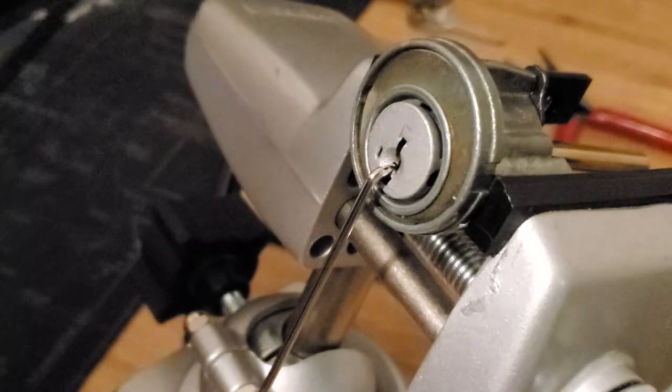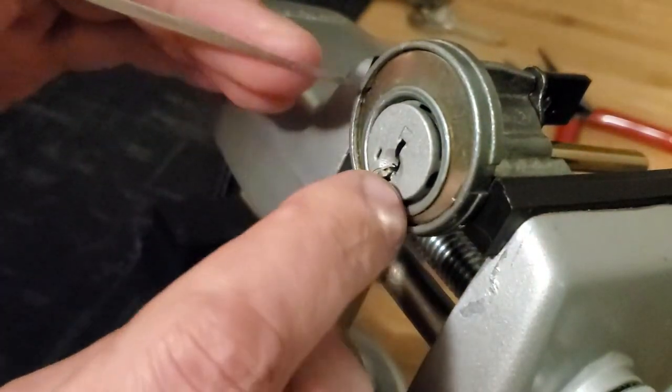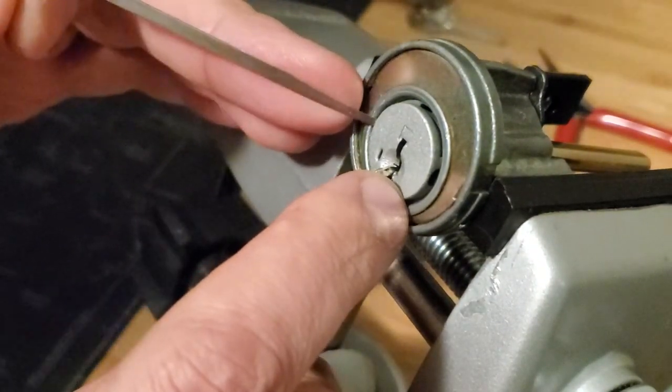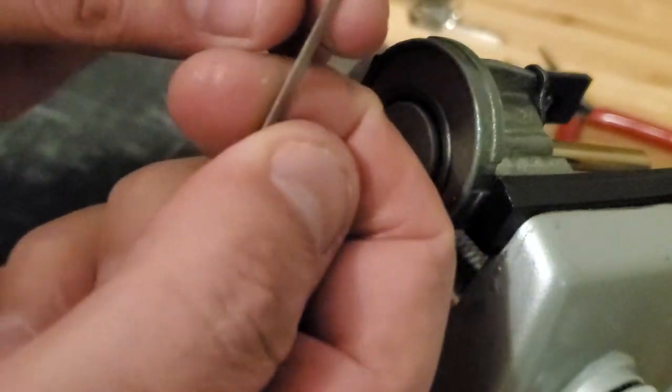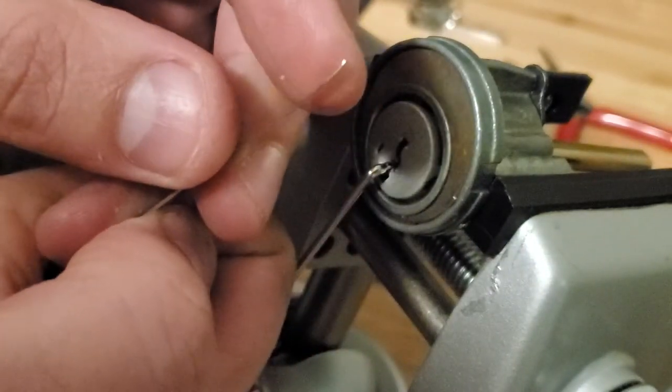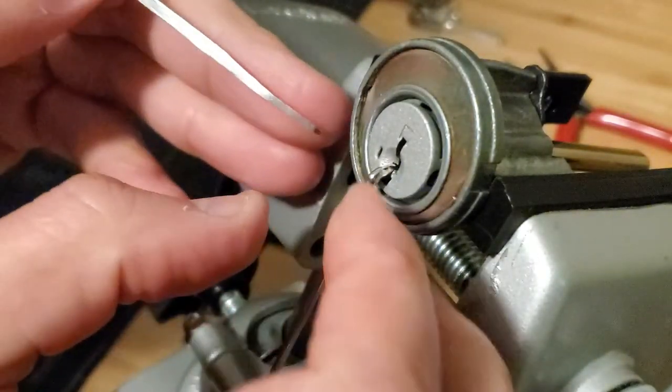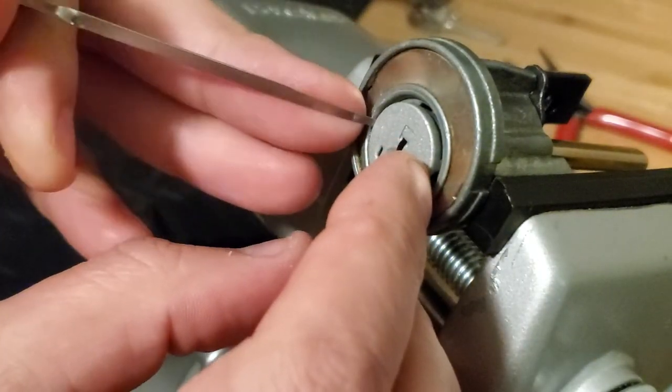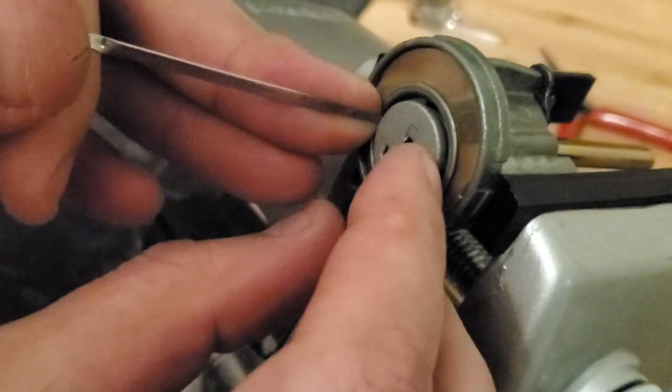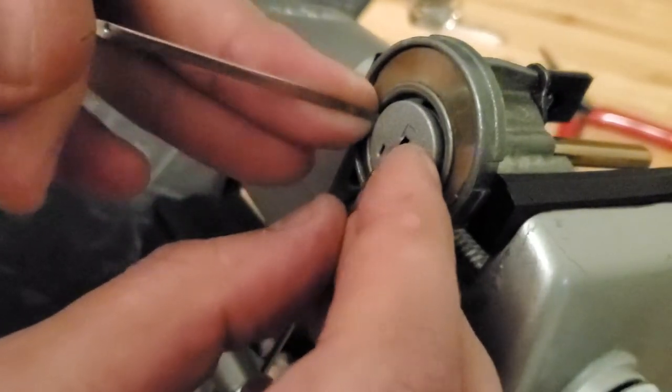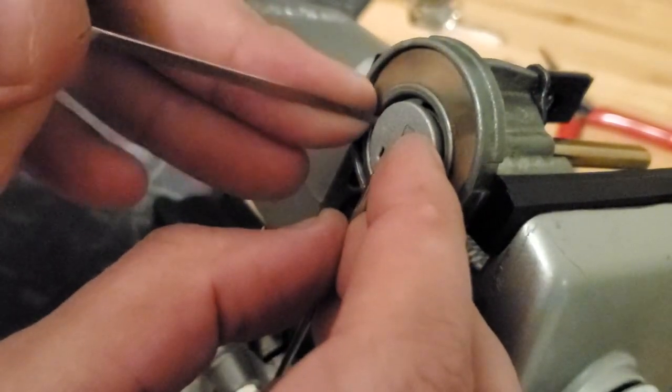I'll start by putting my tension tool in. All the pins are dropped. Sorry, that's just a turning tool. This is my tension tool. Notice there is a very small curve on the end. That is to get between the housing and the sidebar.